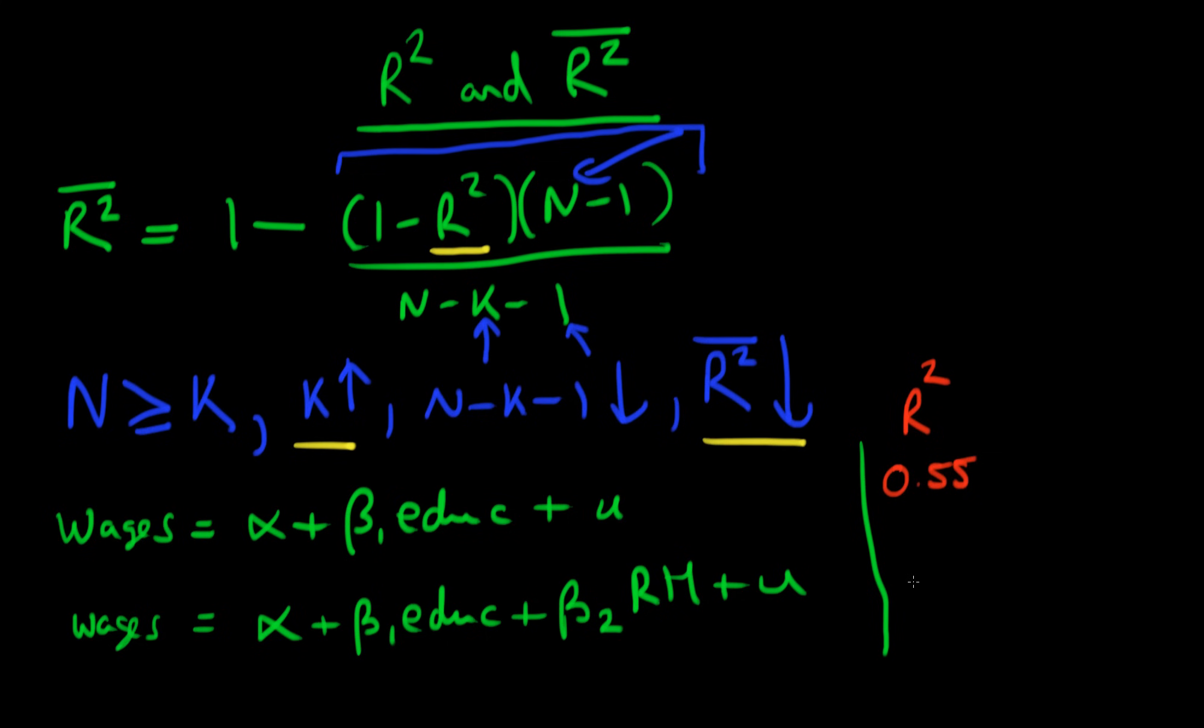On the basis of R-squared, we'd actually choose the second model. But I hope you can see that this last term we've added here, right-handedness, probably doesn't have anything to do with wages. So R-squared perhaps isn't the best way to choose between these two models.